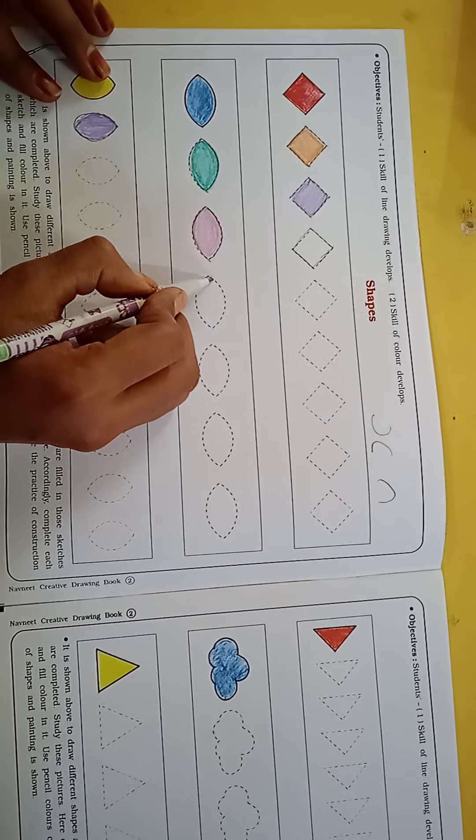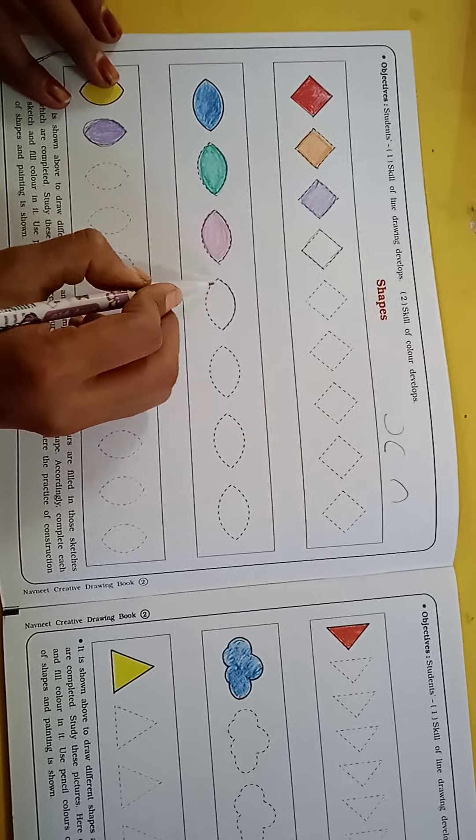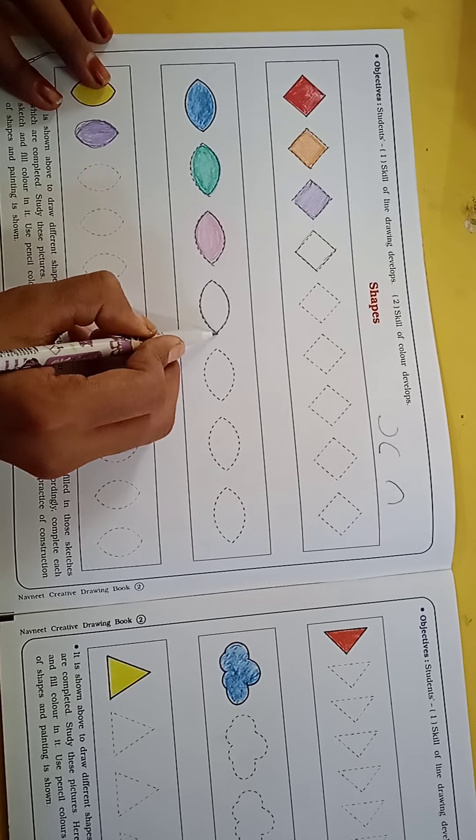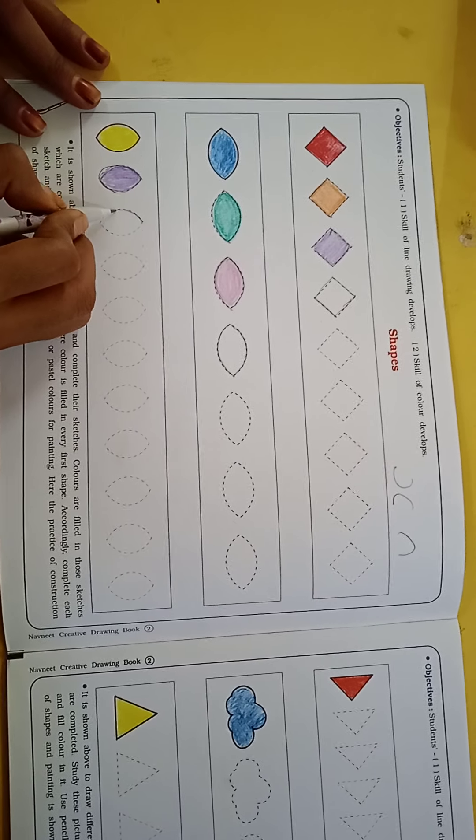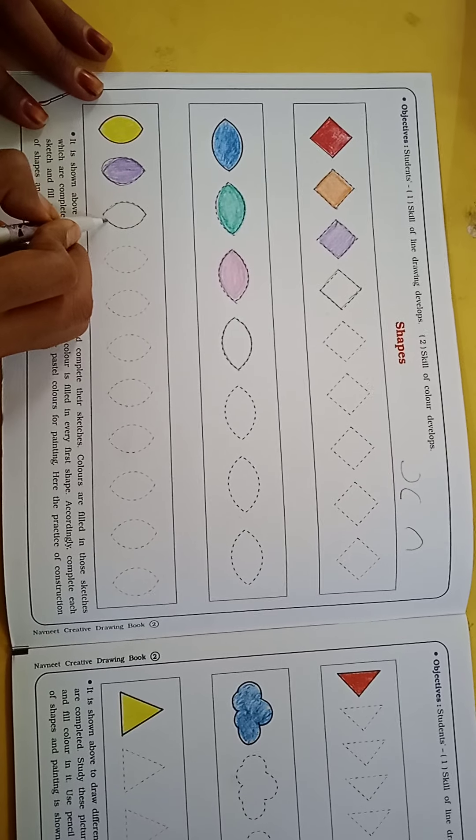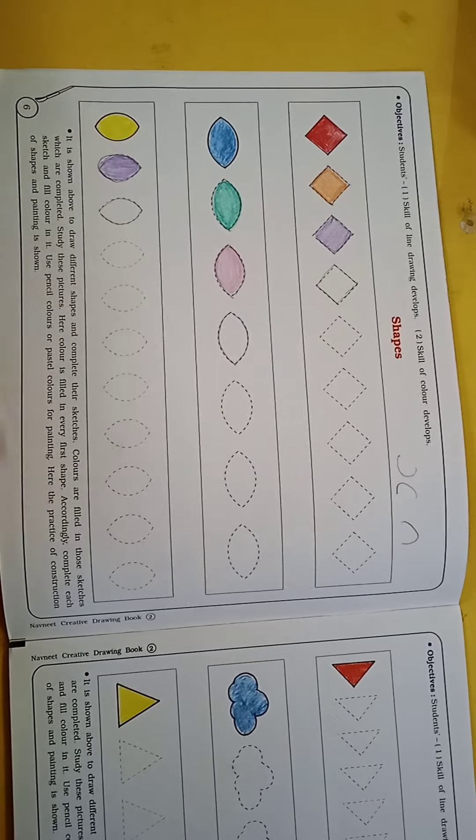You have to match the dotted line, you have to match the model, and this way you have to draw the shape. After that, you have to match the dotted line.